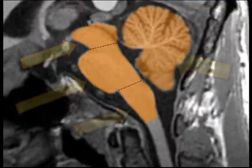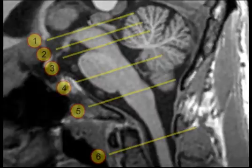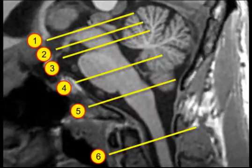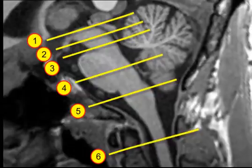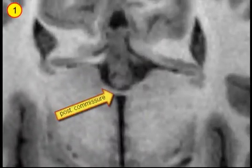We will now go to a series of horizontal MRIs and stop at the levels indicated. We start a horizontal sequence at the posterior commissure, which marks the superior boundary of the mesencephalon.